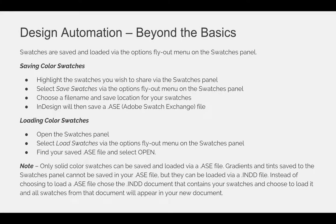Swatches are saved and loaded via the option flyout menu on the swatches panel. You can save color swatches by highlighting the color swatch you wish to share via the swatches panel. You can only select one or all the swatches on the panel. Select Save Swatches via the option flyout menu, and then choose a file name and save location for your swatches.